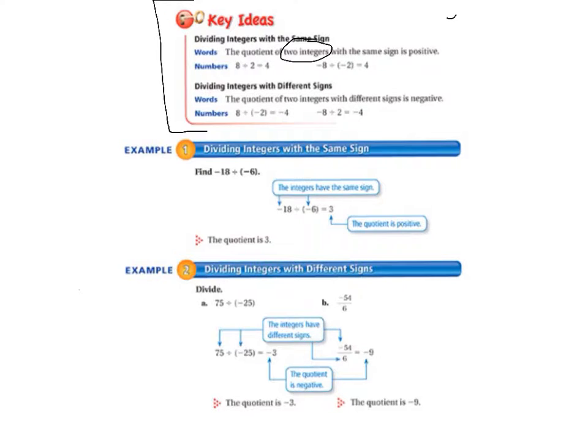If you have an even number of negative signs, then your answer is going to be positive. If you have an odd number of negative signs, your answer is going to be negative.